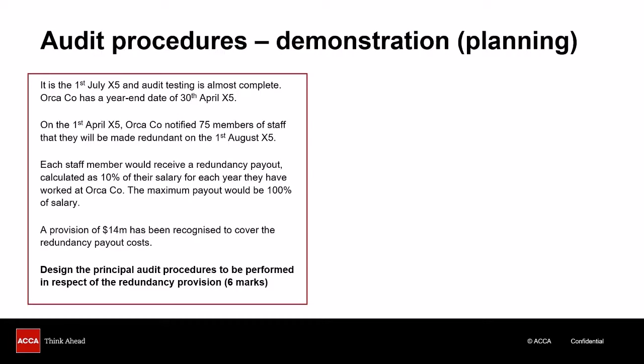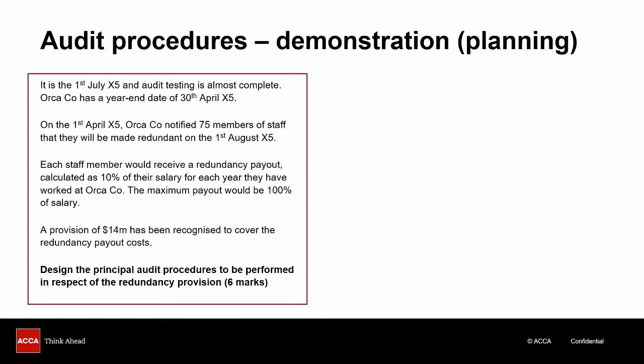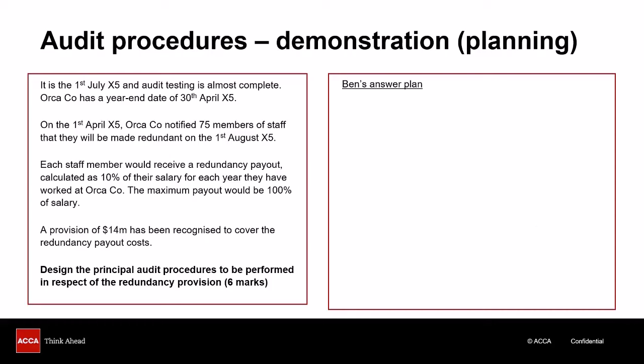On to the good stuff — a demonstration of technique. What we've got showing on screen is a scenario for an audit procedures question worth six marks, so we're going to need six audit procedures. Please pause the recording here and read through the scenario first. Now you've had a chance to read through the scenario. On this side of the screen we're going to come up with an answer plan. The first paragraph is background — but some of it is very relevant. It tells us the date today and the year-end date, so I know I'm a few months after year end and the audit testing is almost complete. I'm at the completion phase of the audit.